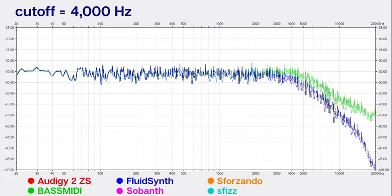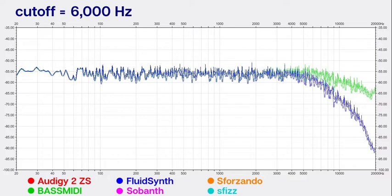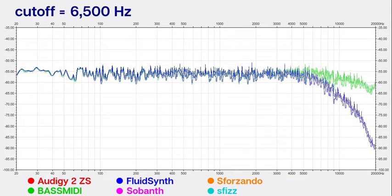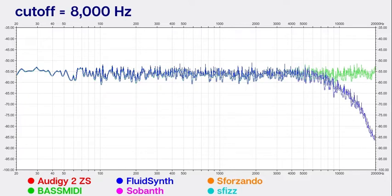And as we increase this, well at this point we have a huge disparity between the filter characteristics of FluidSynth and BASSMIDI. In fact, BASSMIDI at 7000 Hertz is almost completely open, and by the time we get to 8000 Hertz it is fully open, whereas FluidSynth still has quite a roll-off.